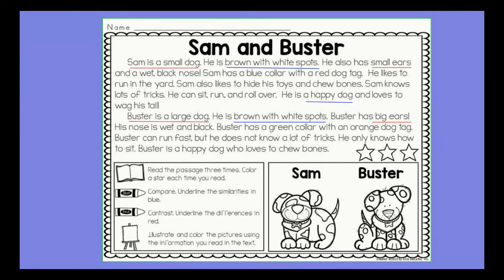It also says Sam is a happy dog, underlined in blue, which means this is a similarity — Sam and Buster are both happy dogs. When you're reading, you'll find lots of neat characteristics about the concepts you're studying. It helps to make a Venn diagram — label one side Sam and the other Buster, write down their key characteristics on each side, then look for what they have in common and place those in the overlapping middle. It helps to brainstorm as you go and work through the process step-by-step.